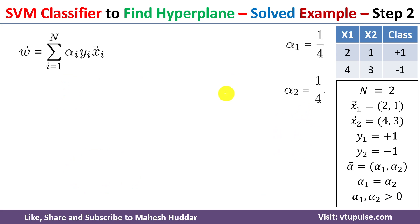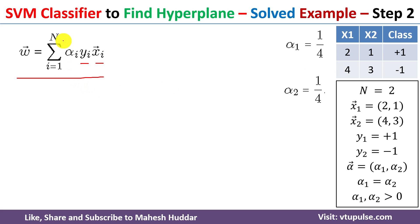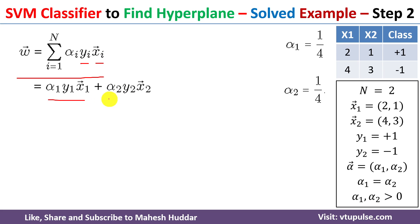Now we go to step 2: calculating the weight vector. The weight vector is always equivalent to the summation from i equals 1 to n of alpha i times yi times xi vector. Expanding this, the first term is alpha 1 y1 x1 vector and the second term is alpha 2 y2 x2 vector.